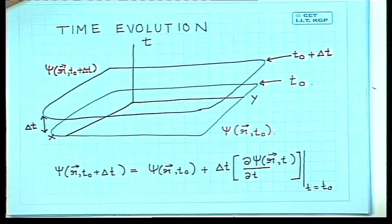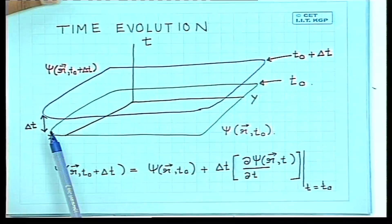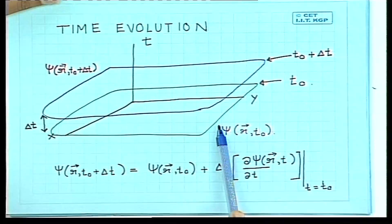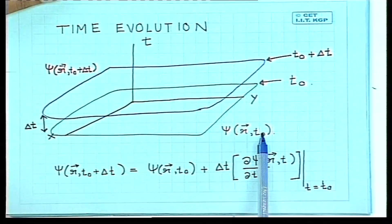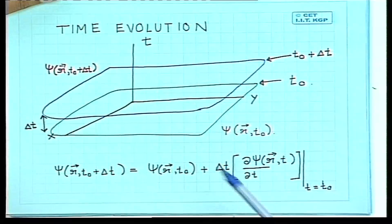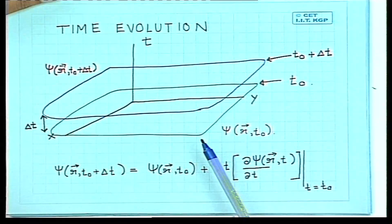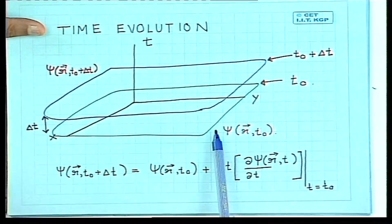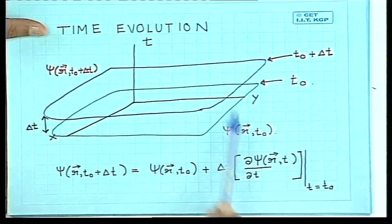The initial condition for the Schrödinger equation is the wave function defined at some time t₀. The wave function ψ is defined everywhere throughout space at some initial time t₀. Just specifying the initial wave function everywhere is sufficient — there is no need to specify time derivatives of the wave function.